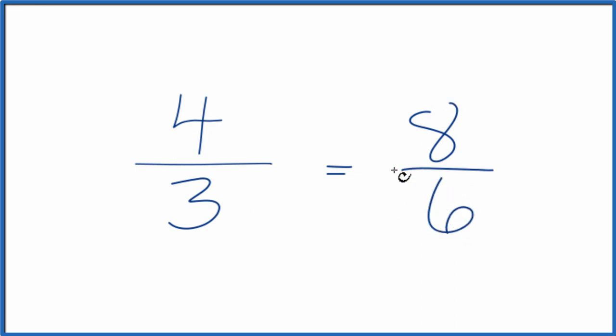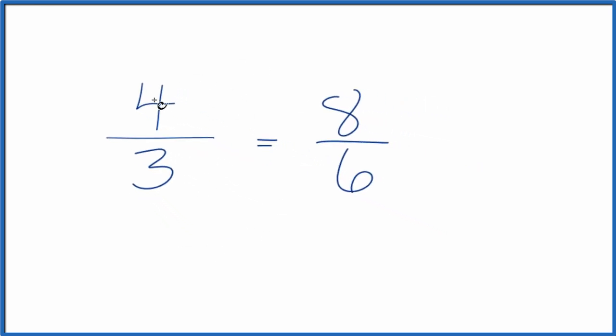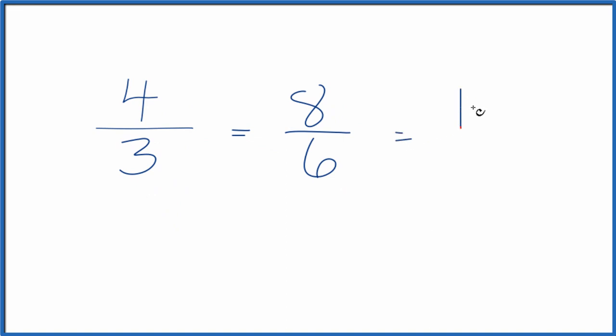We could just multiply the top and bottom by 3. 4 times 3, that equals 12. 3 times 3 is 9. So 12 ninths is another equivalent fraction for 4 thirds.